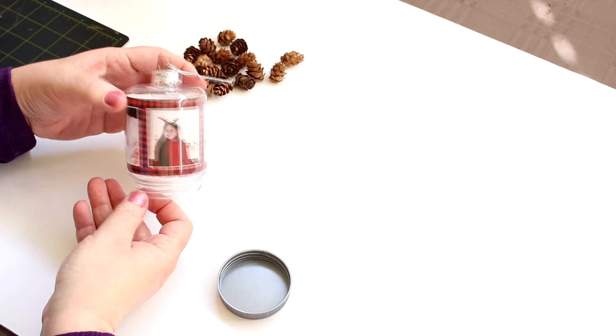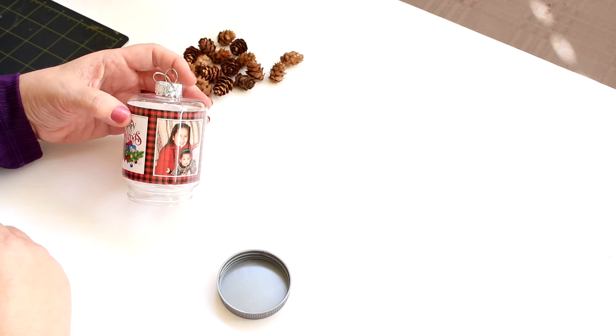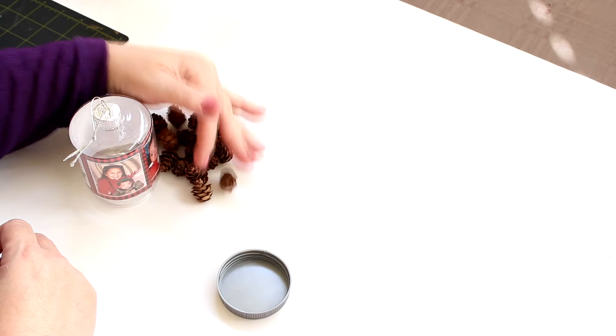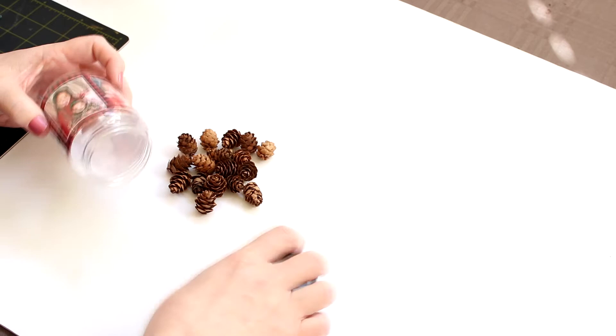So we've got all the photographs in there. So then the next choice you need to make is what are you going to fill it with? Well when I was also at the Dollar Tree I saw these adorable little pine cones and I thought you know that would be nice to put in here. So that's what I'm going to use.